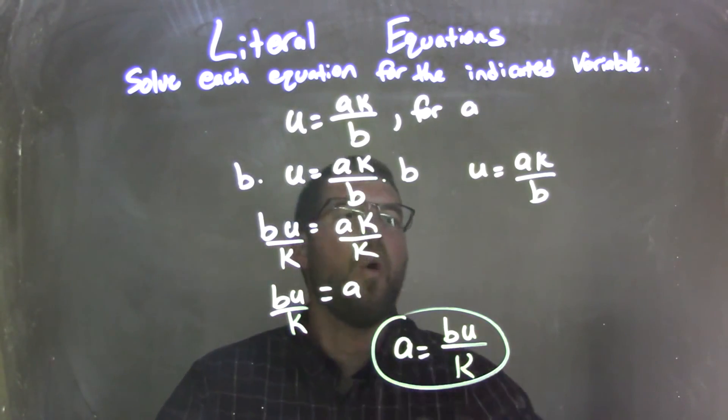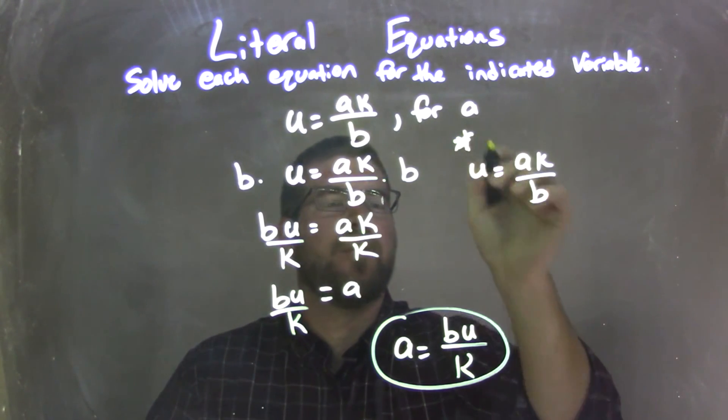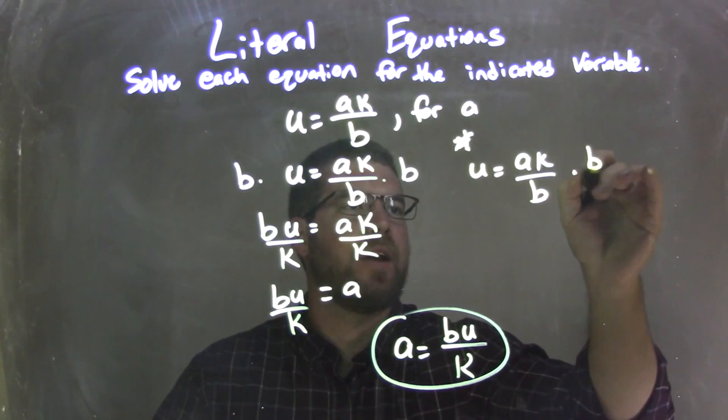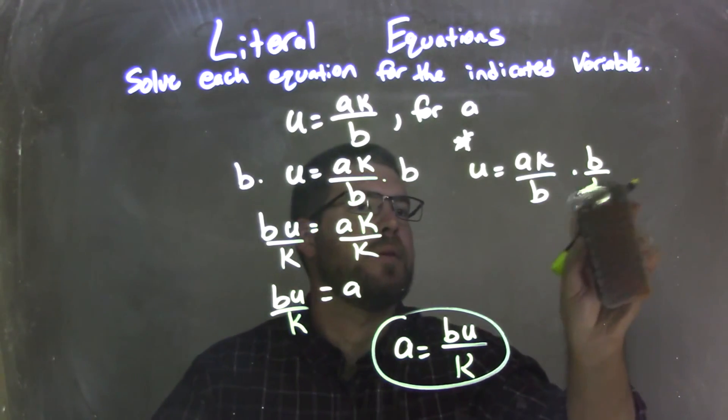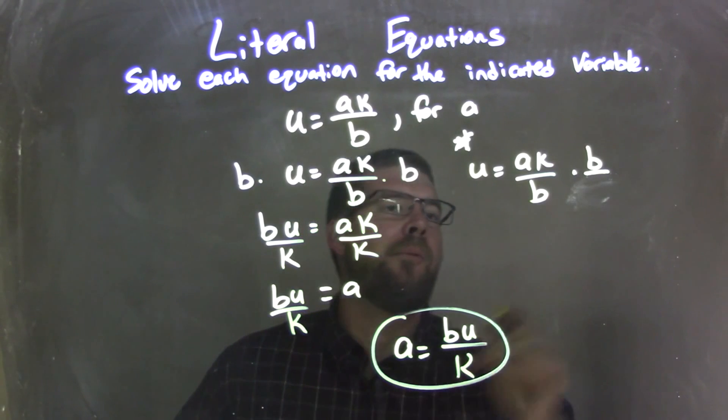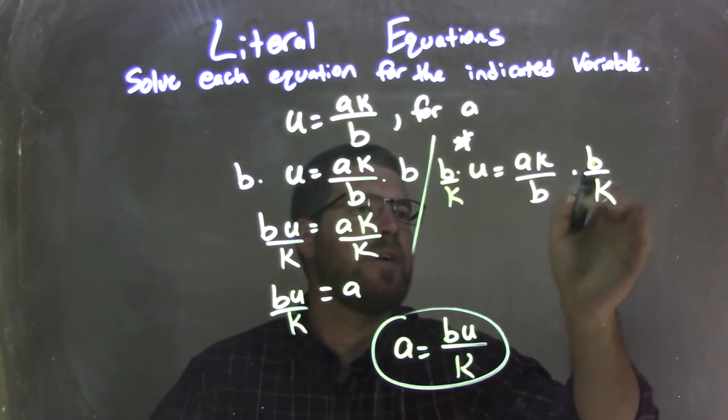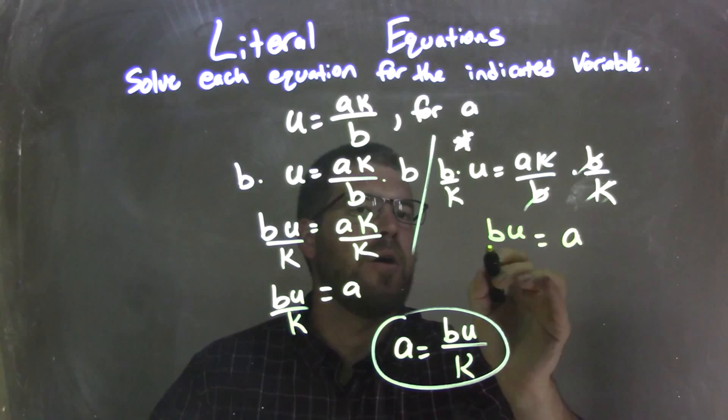Divide by K, or I can do it all in one step. And this is like another little method if you want to do it that way. So I have AK over B here. I can multiply both sides by B over K. We're going to multiply it by B over K. And what that does eliminates the Bs, eliminates the Ks, leaving me with an A by itself here. And then I have multiply across the top, BU over K.